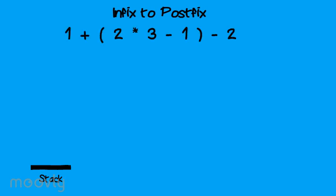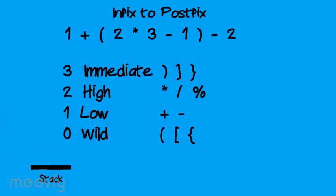Converting from infix to postfix. Converting from an infix expression to a postfix expression is a little more complicated than converting from postfix to infix. Before we begin, I want to define precedence for operators and parentheses, which will be important in the conversion process. We say that any closing parenthesis has a priority of 3, or immediate priority. Any multiply, divide, or mod operator has a priority of 2, or high precedence. Any plus or minus operator has a priority of 1, or low precedence. Any opening parenthesis has a priority of 0, or wild precedence — these can always be placed on the stack, but any other operator can be placed on top of an opening parenthesis. They are kind of like a stack reset.